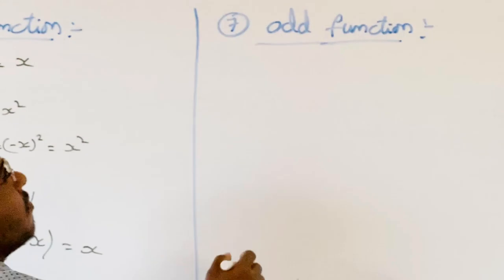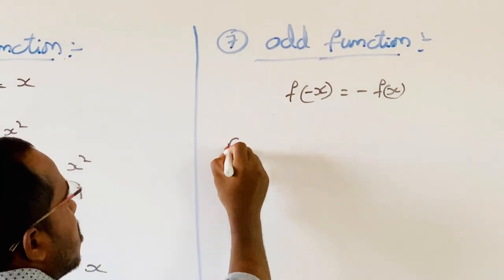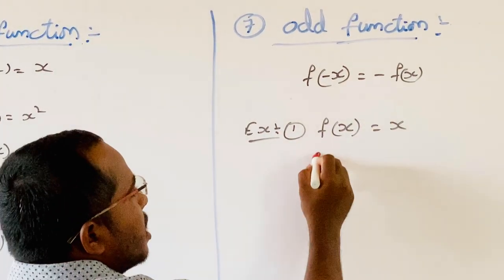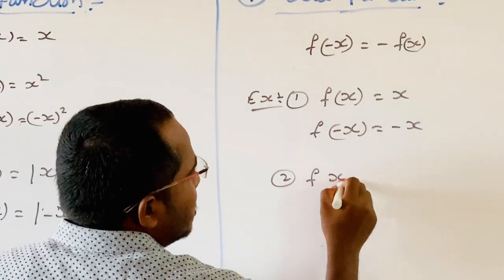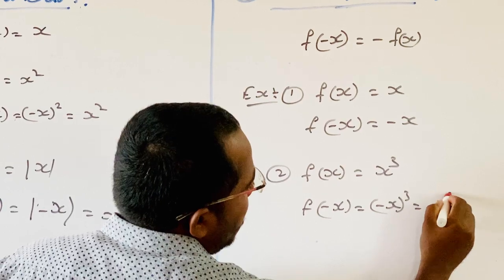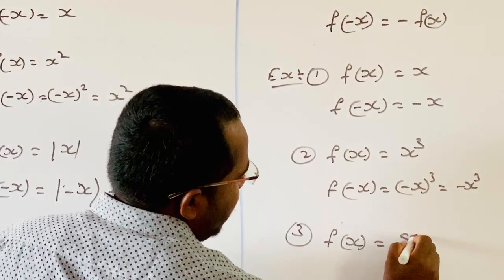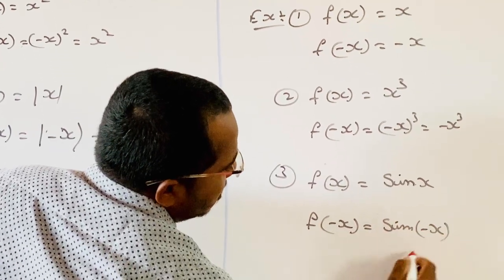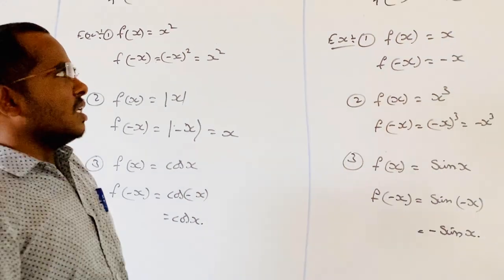Next is the odd function. A function f is an odd function if f of minus x is equal to minus f of x. Examples: f of x equals x — f of minus x equals minus x. Second: f of x equals x cubed — f of minus x equals minus x cubed. Third: f of x equals sin x — f of minus x equals sin of minus x, which equals minus sin x. These are examples of odd functions.